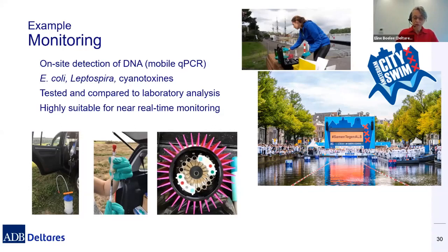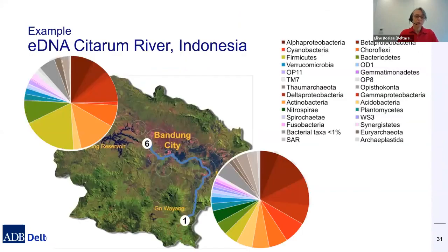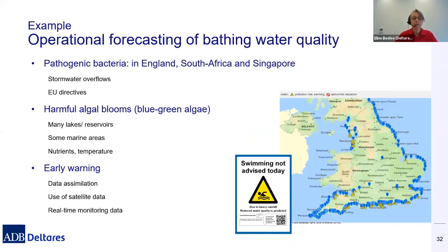This approach is also suitable for other areas. We applied eDNA measurement to the Citarum River in Indonesia, where location one — upstream — shows much more biodiversity in the water than location six, Bandung City, where there is much more pollution. We combine this in forecasting bathing water quality, using stormwater overflows, weather forecasts, water flows, and sometimes satellite data, together with real-time monitoring, to produce advice ahead of regular measurements.